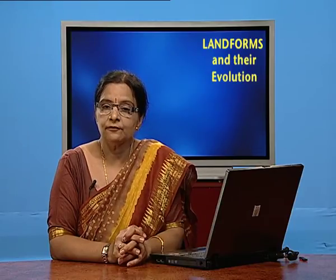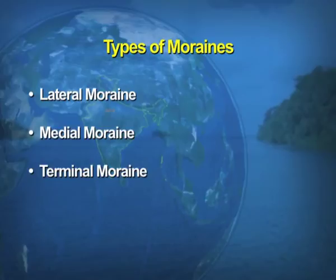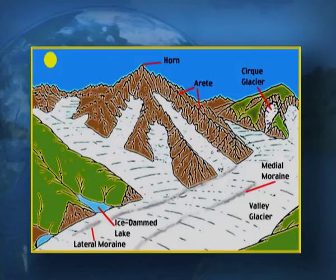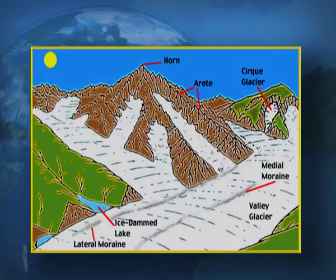There are different types of moraines. Lateral moraine is the moraine deposited on either side of the glacier. Medial moraine is formed when two lateral moraines from opposite sides join together. Terminal moraine is moraine dropped at the end of the valley glacier in the form of a ridge. This picture on the screen shows horn, cirque, medial moraine, and lateral moraines — the different features formed by the glacier.